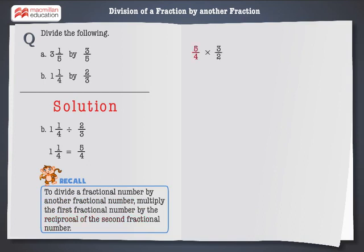Hence, 5 by 4 has to be multiplied by 3 by 2, which gives us 15 by 8. Hence, we get 15 by 8 as the answer.